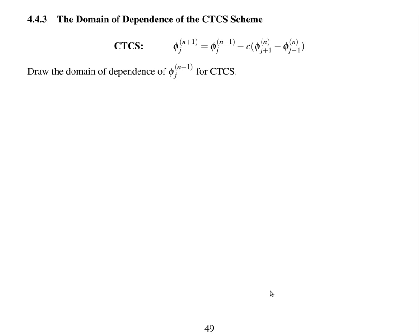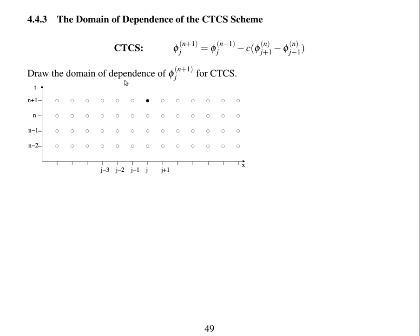Now we're going to look at the domain of dependence of the centred in time, centred in space scheme. Here is a reminder of the CTCS scheme: phi j n plus 1 now depends on two different time levels, n minus 1 and n, and three different spatial points. Draw the domain of dependence of phi at time level n plus 1 and position j for CTCS, and pause the video while you do that.